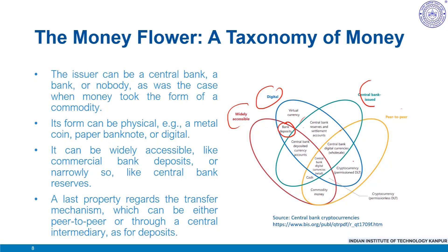While discussing money, one needs to make a distinction between two forms: token-based money like physical cash, and account-based money like bank deposits. Token-based money — for example, bank notes or physical coins — can be exchanged in a peer-to-peer setting, but such exchanges rely critically on the payee's ability to verify the validity of the object. With cash, you are worried about counterfeiting, so you need the cash to be unforgeable and valid.